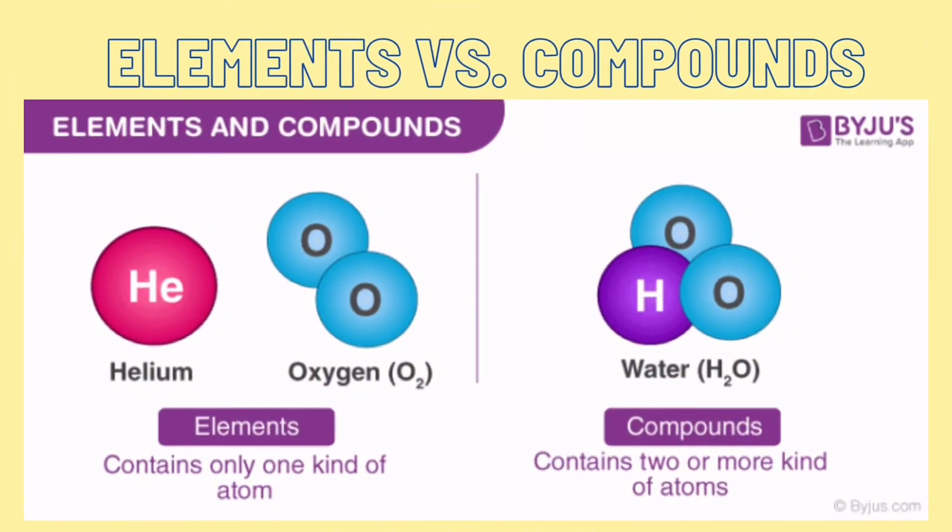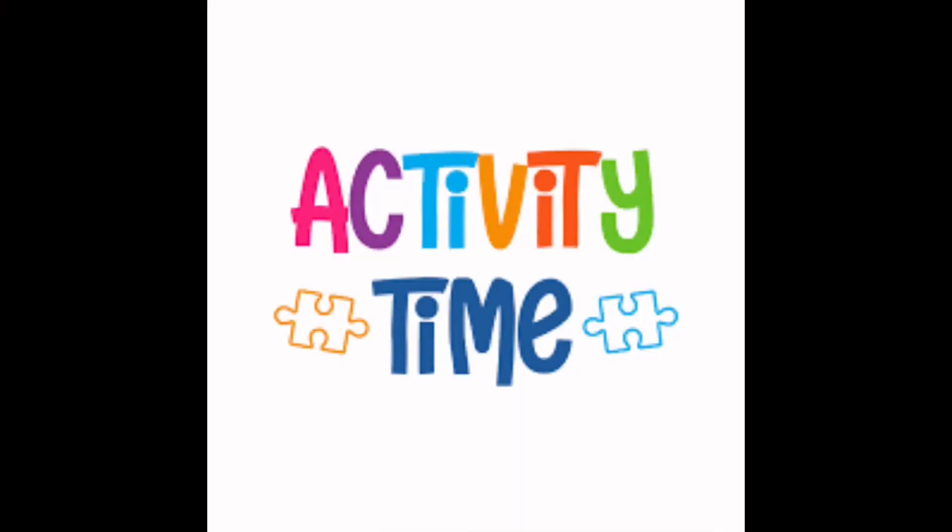To wrap up: elements contain only one kind of atom, while compounds contain two or more kinds of atoms. Now let's determine whether the image is an element or compound.